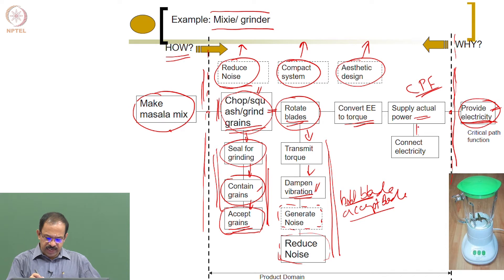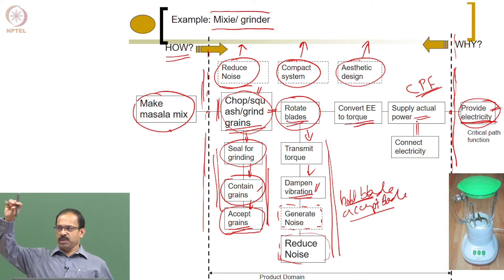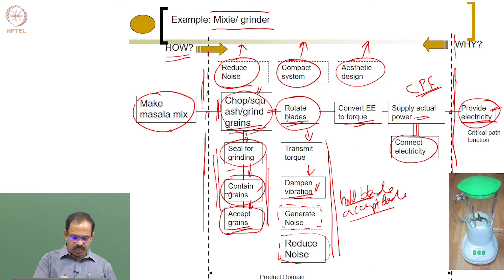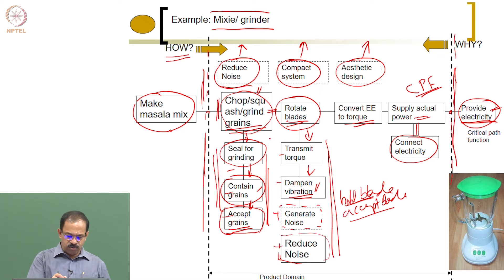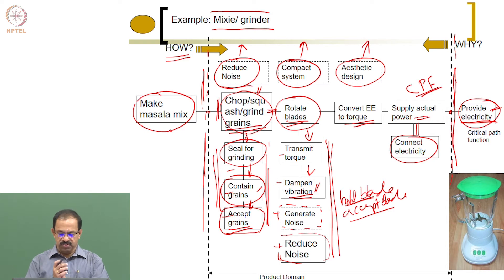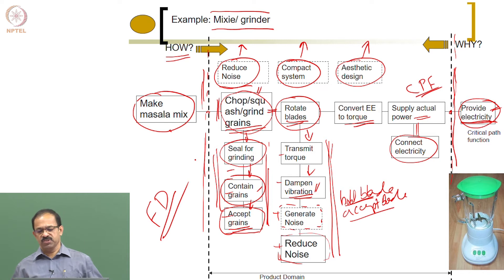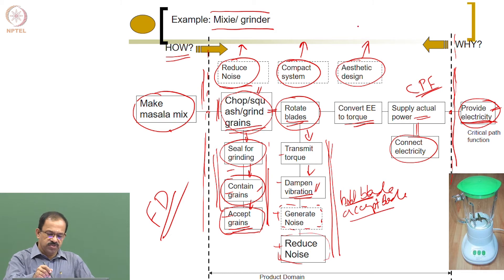For supply actual power, you need something to connect electricity from the main socket to the equipment — basically connect electricity. This shows the decomposition of functions. For each function identified, there will be a part in the product that does that job. By looking at this you will be able to identify all the functions — that is the functional decomposition using the FAST method.